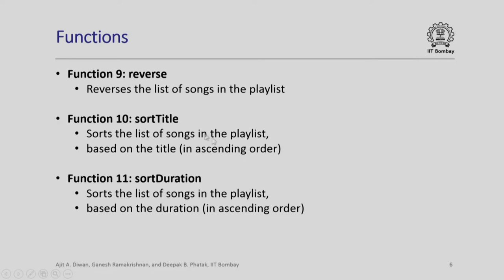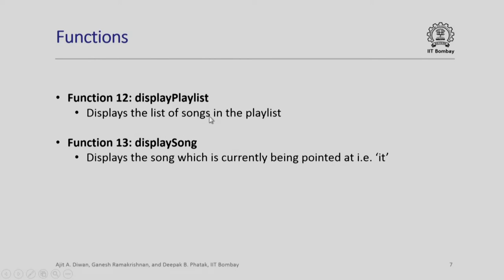We have additional functions such as reverse to reverse the list of songs, and sort on title which will sort the list on the titles of the playlist in ascending order — but it is a toggle, so if you press it again it will sort in the other direction. Sort duration is another sorting which will sort the playlist using the duration. Display playlist and display song are two functions added merely to demonstrate the output of the program; these are not central to the functionality of the playlist but are for illustration purposes.